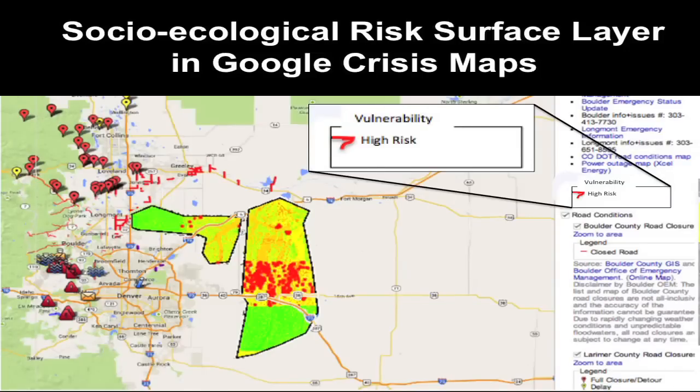We imagine this as an underlying layer of vulnerability for a map mashup, like in Google Crisis Maps. So you could see road closings over this area, and maybe predict before it happens where potential problem areas might be, or what's going under-reported.